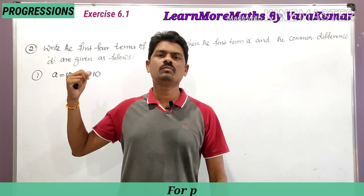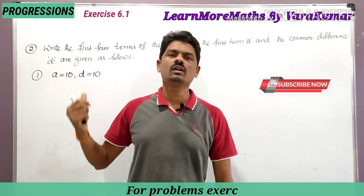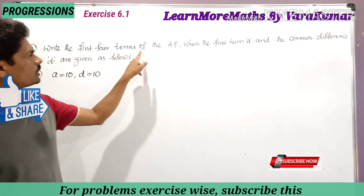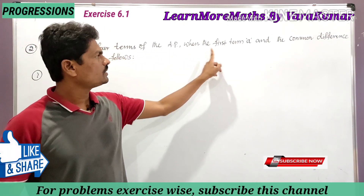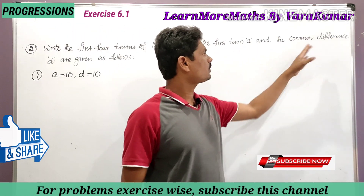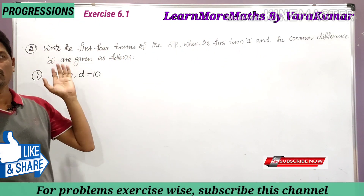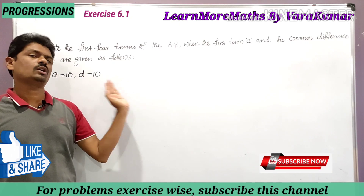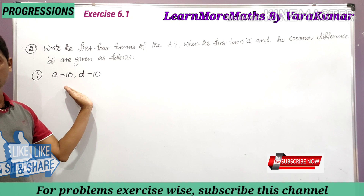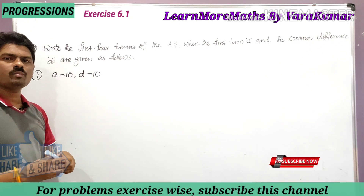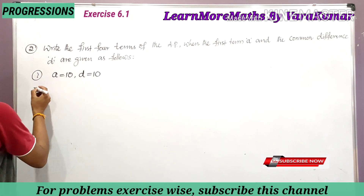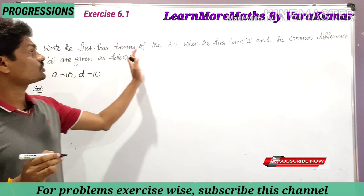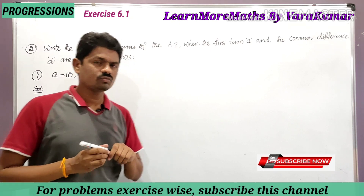This is the second problem from Exercise 6.1. The question asks us to write the first four terms of the AP when the first term 'a' and the common difference 'd' are given. There are five bits in this problem. In the first bit, a is equal to 10 and d is equal to 10. We have to find the first four terms.